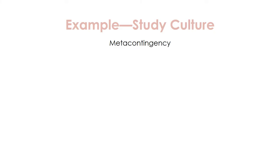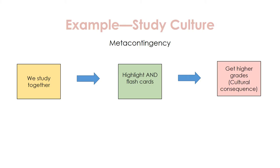Examining this example in the form of a metacontingency: when my study buddy and I study together, we are now using both highlighters and flashcards. This in turn leads us to getting higher grades. Our interlocking behavioral contingencies have been interwoven enough that it has been reinforcing for us to engage in the behavior of using both highlighters and flashcards to achieve our cultural consequence of getting higher grades together as study buddies.